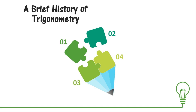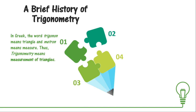Where does trigonometry come from? Speaking of its etymology, trigonometry came from the two Greek words trigonon and metron. Trigonon, which means triangle, and metron, which means measure. Thus, trigonometry means measurements of triangles.